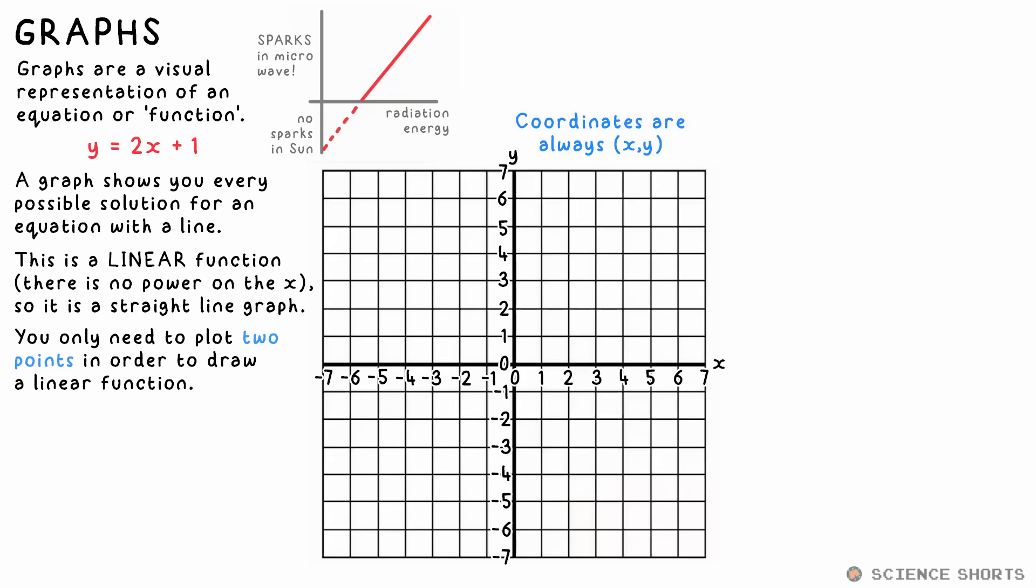But let's say we have two coordinates, one, three, and three, seven. Let's plot them. If we join these with a straight line and extrapolate the line, extend it, we have our graph.